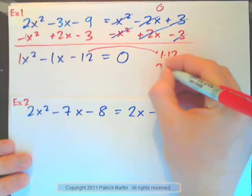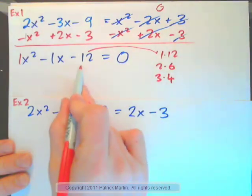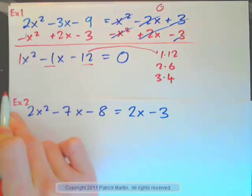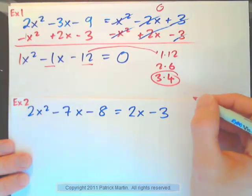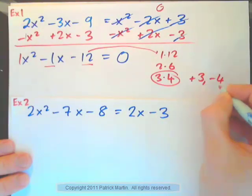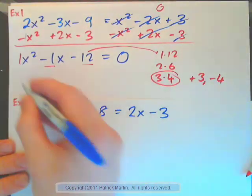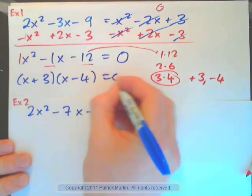1 times 12, 2 times 6, 3 times 4. Two numbers that multiply to negative 12 and add to negative 1. I would work with these two numbers: positive 3, negative 4. Add them, negative 1. Multiply them, negative 12. So x plus 3 times x minus 4 equals zero.